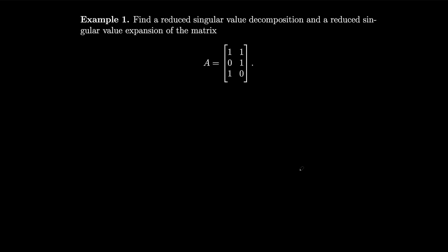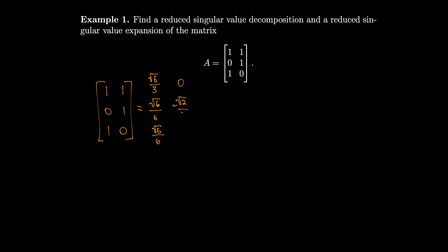We'll find a reduced singular value decomposition and a reduced singular value expansion of the matrix A given here. We already found the singular value decomposition of this matrix in the previous section in example 2 of section 9.4. So we had the matrix with entries 1, 1, 0, 1, 1, 0, and U was √6/3, √6/6, √6/6, 0, −√2/2, √2/2, −1/√3, 1/√3, 1/√3.